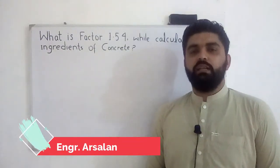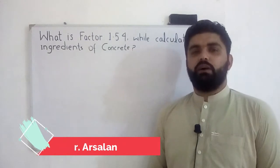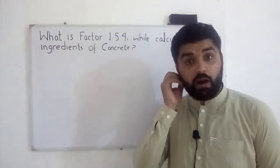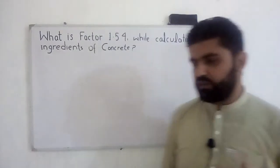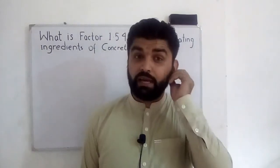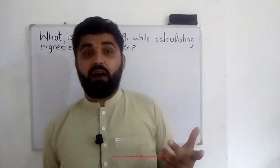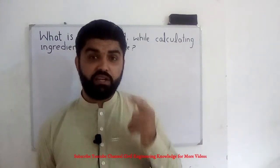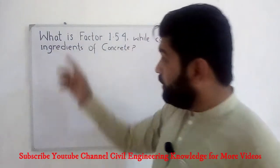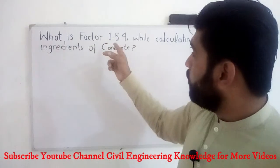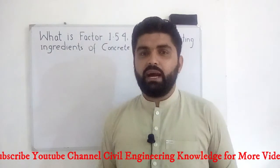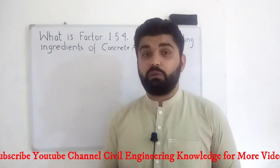Hi friends, I am engineer Arsalan. Today our topic is related to concrete. While calculating the different ingredients of concrete, we use a basic factor which is 1.54. Today we will understand what this factor is, why we are using it, and what is the reason for using this factor. As you can see, this is about factor 1.54 while calculating ingredients of concrete.